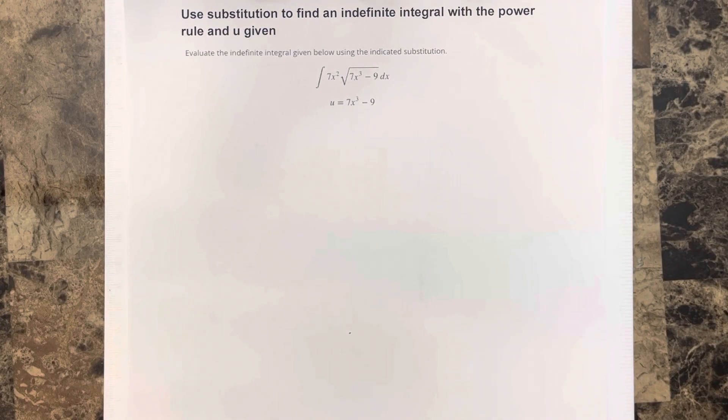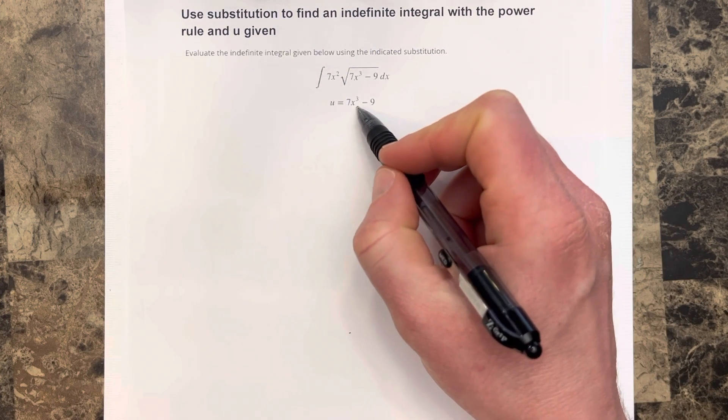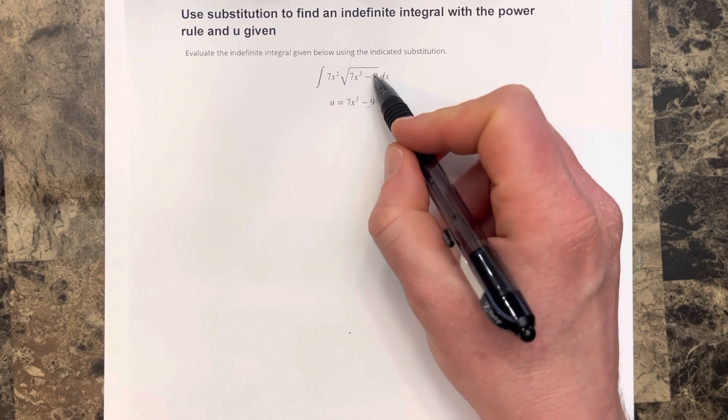In this video, we're going to use substitution to find an indefinite integral with the power rule and u given. So evaluate the indefinite integral given below using the indicated substitution. So they tell us that u is equal to 7x cubed minus 9, which is inside the radical.